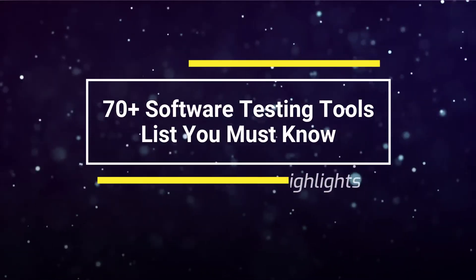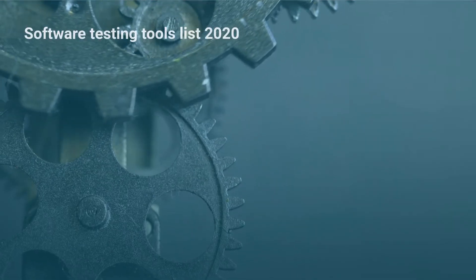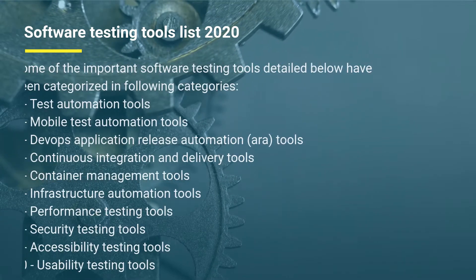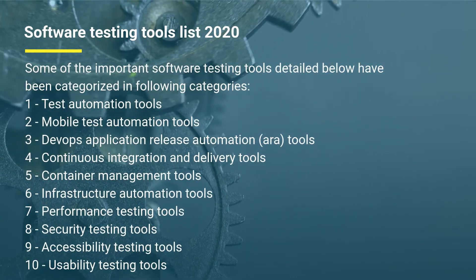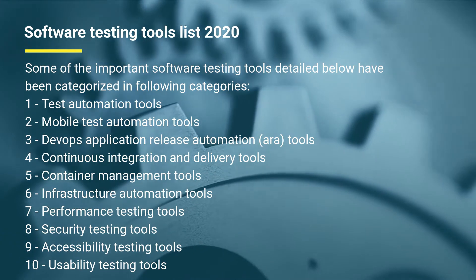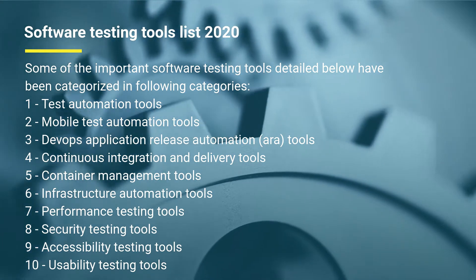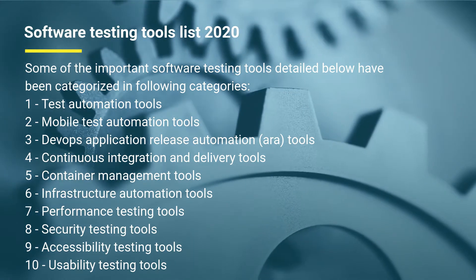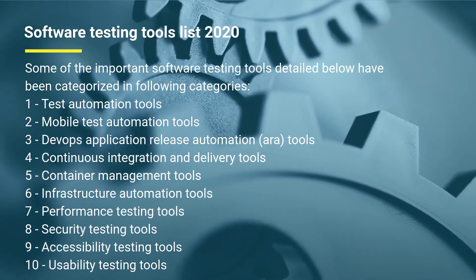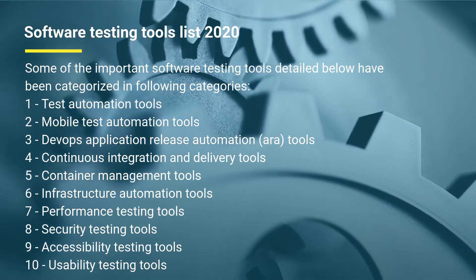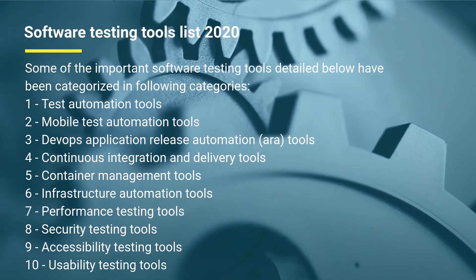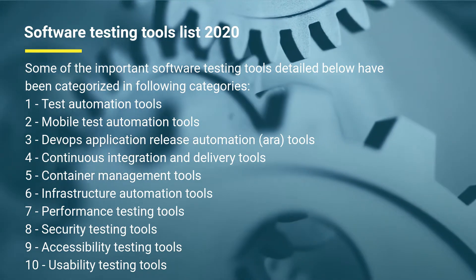Here is the software testing tools list 2020. The important software testing tools have been categorized in the following categories: first, test automation tools; second, mobile test automation tools; third, DevOps application release automation (ARA) tools; fourth, continuous integration and delivery tools; fifth, container management tools; sixth, infrastructure automation tools; seventh, performance testing tools; eighth, security testing tools; ninth, accessibility testing tools; tenth, usability testing tools.